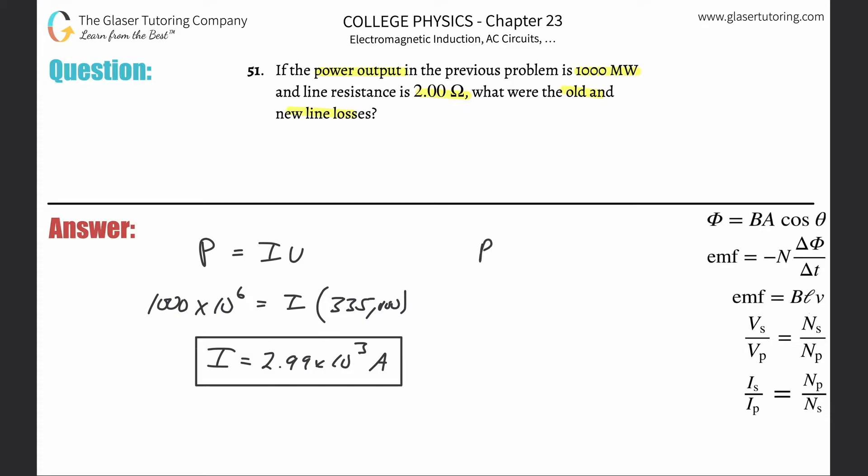So now if I want to find the power loss, what I need to do is I need to take this current that's flowing through the line, square it, and then multiply it by the resistance of the line, because the resistance inside the line, that resistance of the line is a power loss.